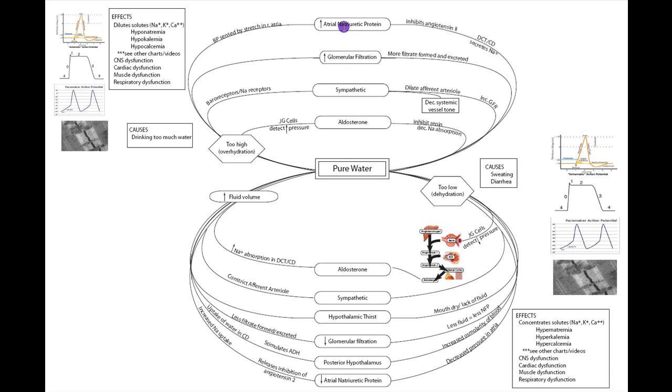In the case of the atrial natriuretic protein, again, this is not a good one because the BP might be up and the atria is going to sense that stretch. But the way ANP works is it inhibits angiotensin II, causes secretion of sodium. This is not really what we want because we already have hyponatremia. So again, looking at all these mechanisms, we don't have a really good way of getting rid of pure water, of regulating pure water.